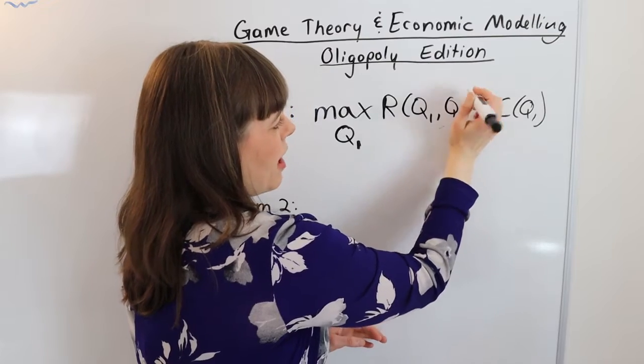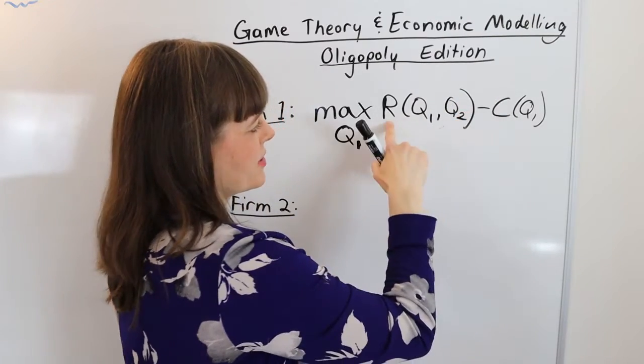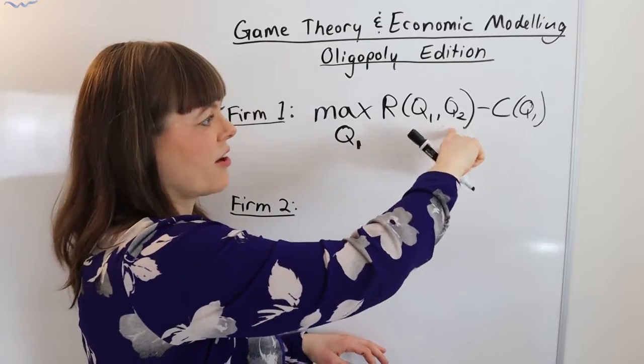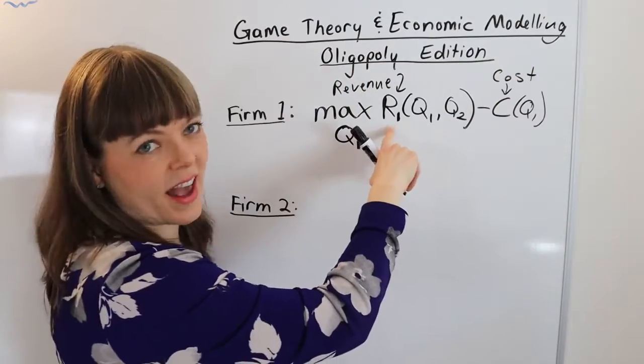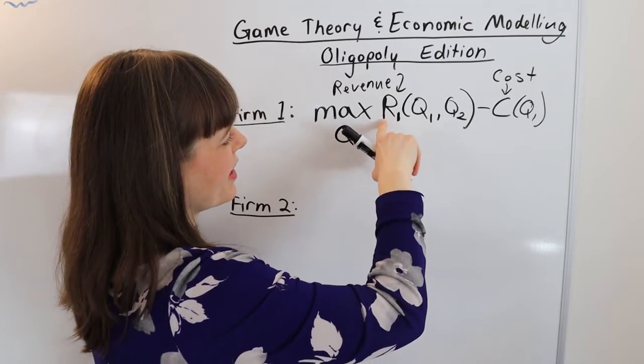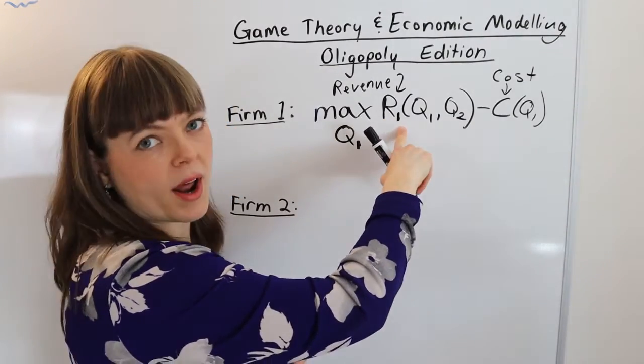And of course this is an oligopoly with only two firms. So revenue depends both on our quantity and also on the other firm's quantity. And I need to add in a subscript of one because the revenue here is revenue to firm one.